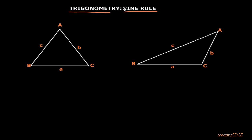Here we have two triangles. The first triangle is an acute triangle — it is acute because it has an acute angle. The second triangle is an obtuse triangle because it has an obtuse angle.